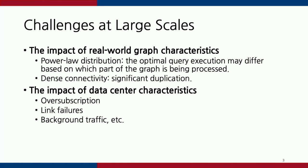There are two particular challenges for large-scale graph query processing. The first is the impact of real-world graph characteristics. Specifically, real-world graphs have a power-law distribution, which indicates that the optimal query execution may differ based on which part of the graph is being processed. Real-world graphs are also highly clustered, which indicates that during query execution there will be a lot of duplicates being generated. The second challenge is the impact of data center characteristics, which can make query execution inefficient if you ignore them.